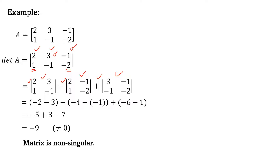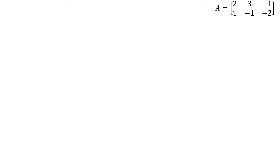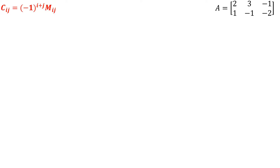Next, we find the adjoint of the given matrix. We know that the adjoint of a matrix is the transpose of the matrix of cofactors of its elements. So we first find the cofactors of the elements of this matrix. Since this matrix has six elements, there will be six cofactors. The cofactor of element a-ij is defined as C-ij equals (−1) raised to the power i+j, into M-ij, where M-ij are the minors of the elements of A.